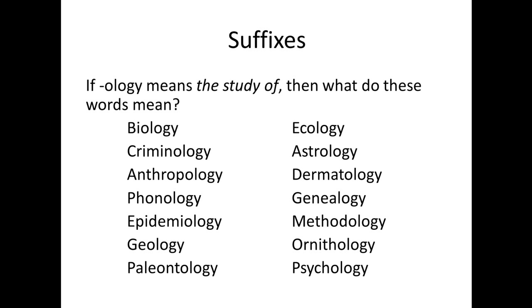You can also look at suffixes — those parts at the ends of words. If we know that -ology means the study of something, then what do these words mean? Biology: we just learned bio means life, and -ology means study of — therefore, it is the study of life. Criminology is the study of crime and criminals. Anthropo means man, so anthropology is the study of man.